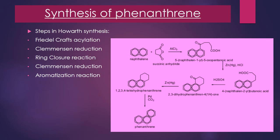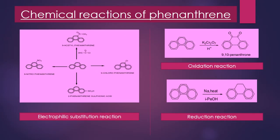Coming to the chemical properties of phenanthrene. Phenanthrene is an aromatic compound and undergoes electrophilic aromatic substitution reactions like halogenation, nitration, sulfonation, etc. The important question is at which position substitution will take place. Substitution occurs preferentially at the 9 and 10 positions because of the resonance-stabilized carbonium ion formed at those positions when an electrophile attacks the phenanthrene ring.